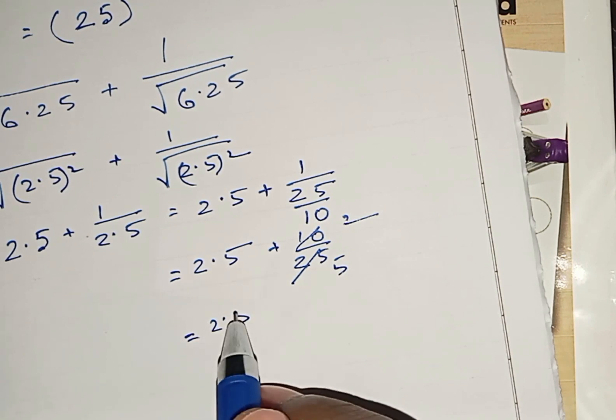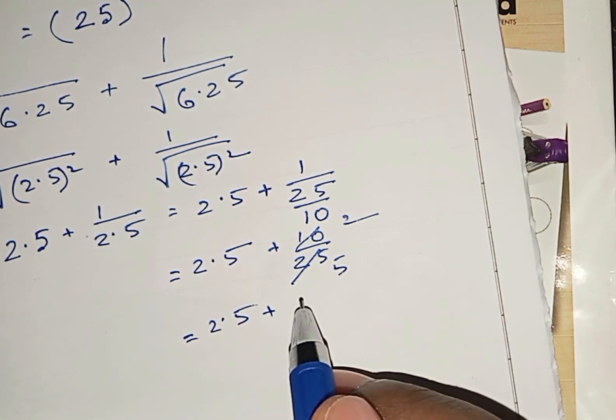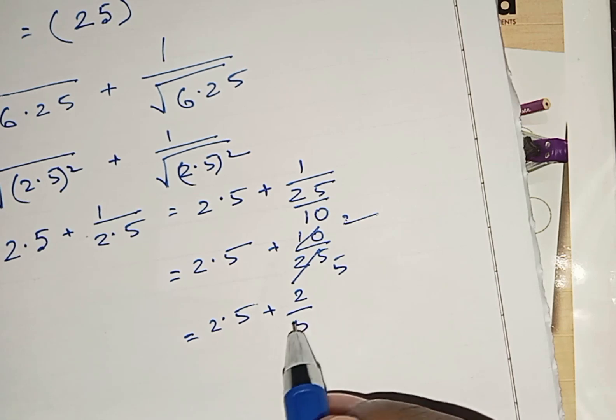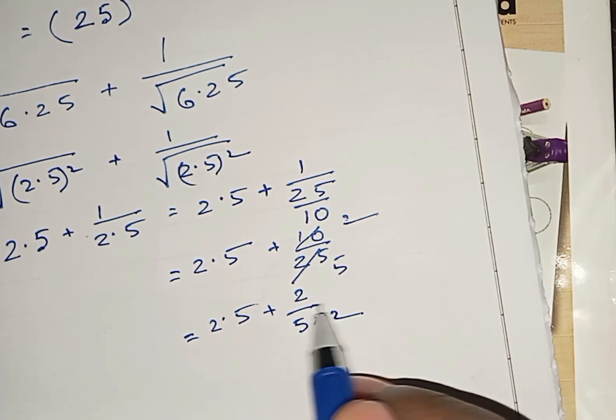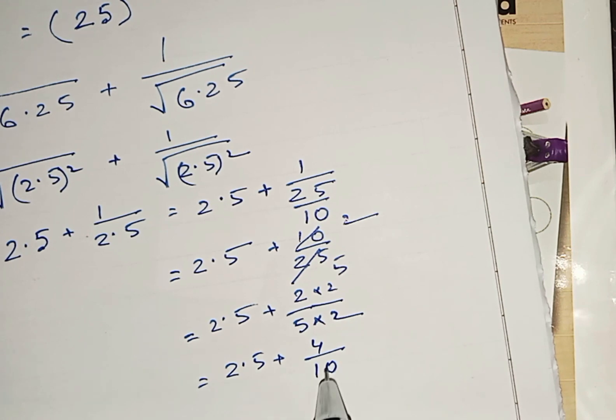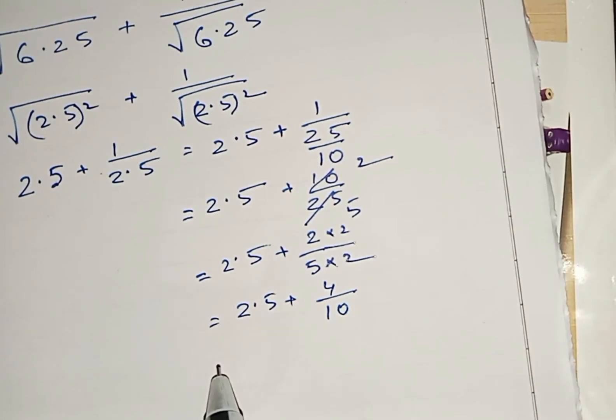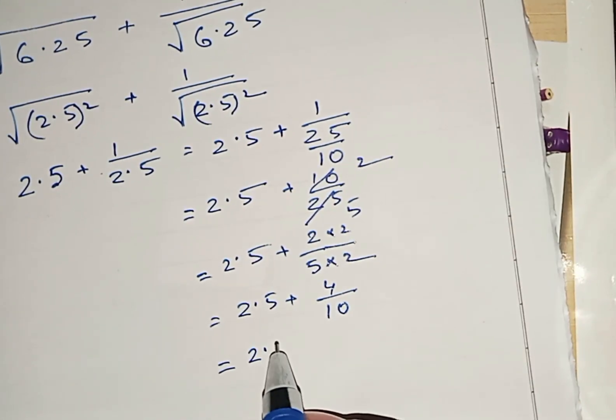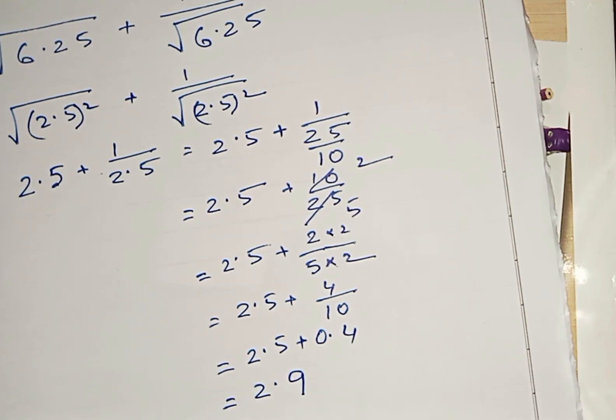It is 2.5 plus 2 by 5. Now, if we convert to a decimal, multiply by 2 here and 2 here, so it will be 2.5 plus 4 by 10. 4 by 10 means 0.4. 2.5 plus 0.4 equals 2.9.